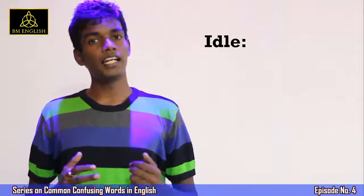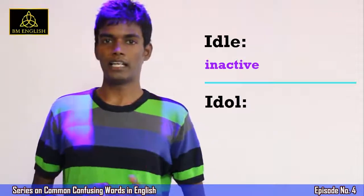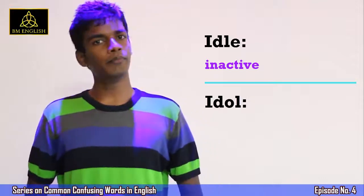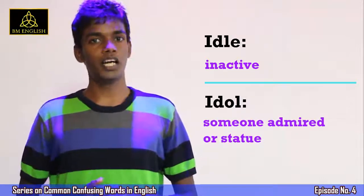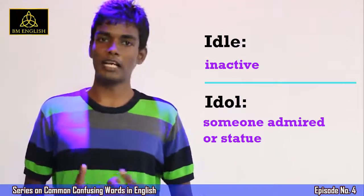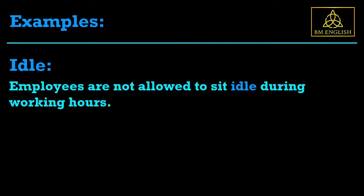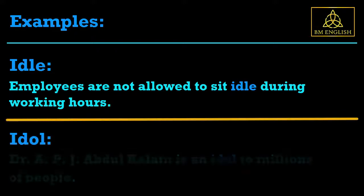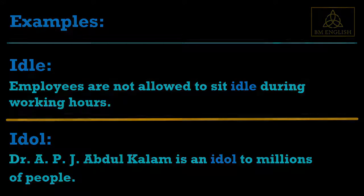The next is: idle and idol. 'Idle' means inactive, bekar. And 'idol' means someone admired, or a statue — adarsh, or dev kratima. For example: 'Employees are not allowed to sit idle during working hours.' 'Dr. A.P.J. Abdul Kalam is an idol to millions of people.'